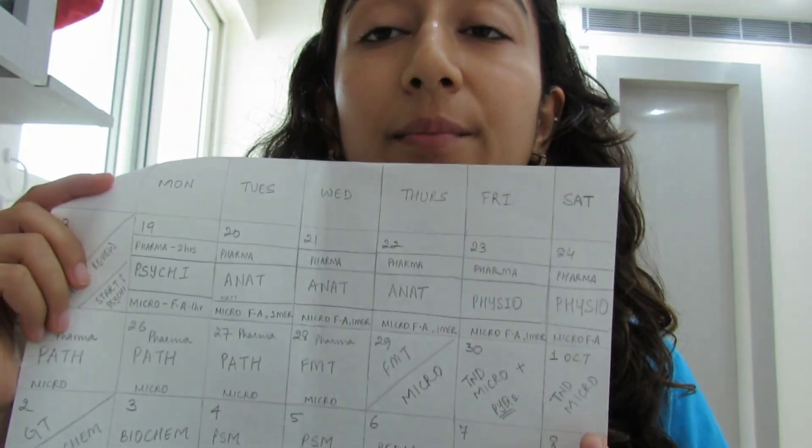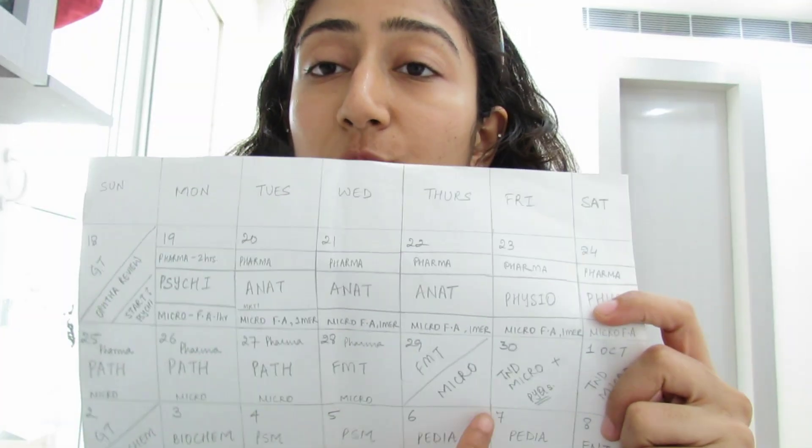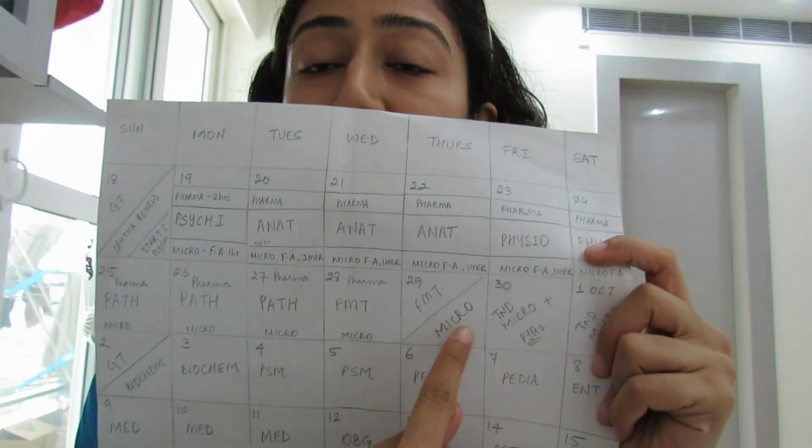After filling in the TND dates, plan the remaining days before each TND — how many days you'll give to that subject so you finish it in time. For example, if TND Micro is on Saturday and Sunday, you should finish microbiology the previous week from Monday to Friday. Fill that into your timetable accordingly.